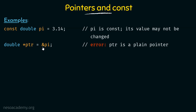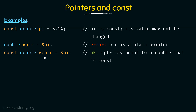The ampersand operator is the address-of operator. We are trying to store the address of pi, which is of type double, to PTR. But here it is going to throw an error. The error says PTR is a plain pointer. If you want to store the address of a constant object to a pointer, the pointer also has to be a pointer to const, but this is a normal pointer of type double, so we cannot store the address of the constant pi.